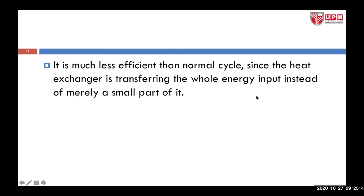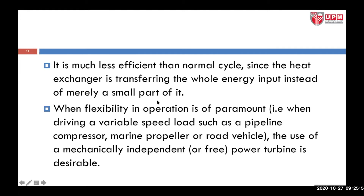This arrangement is much less efficient than the normal cycle since the heat exchanger is transferring the whole energy input instead of merely a small part of it. When flexibility in operation is of paramount importance — in other words, when driving a variable speed load such as a pipeline compressor, a marine propeller, or a road vehicle — the use of a mechanically independent or free power turbine is desirable, in contrast to the earlier fixed speed example.